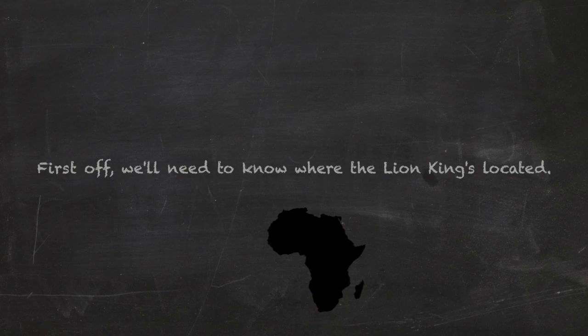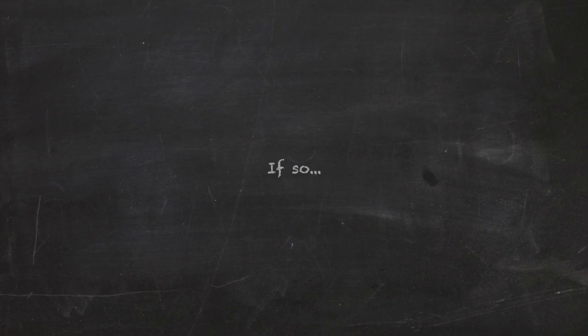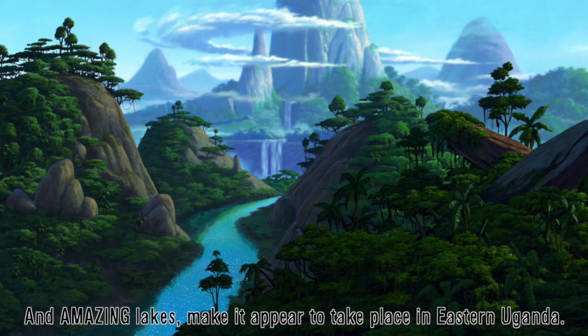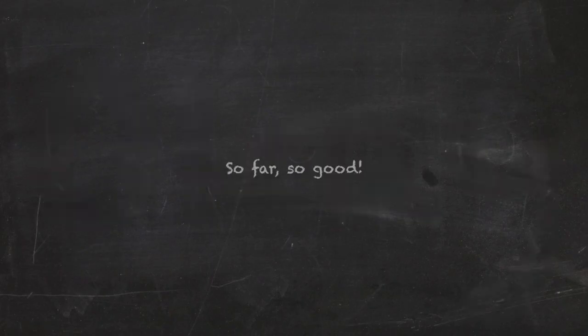First off, we'll need to know where the Lion King's located. We'll have to assume this is during a time with no humans. If so, then the desert, grasslands, mountains, and amazing lakes make it appear to take place in eastern Uganda. Okay, so far so good.